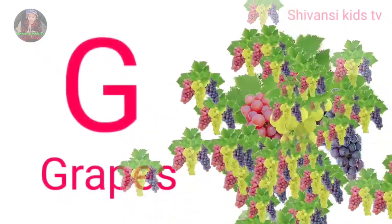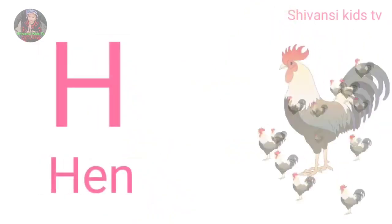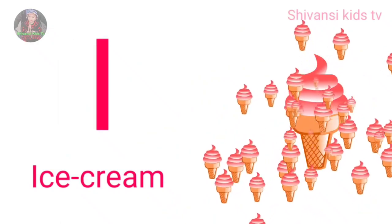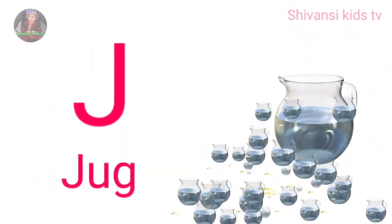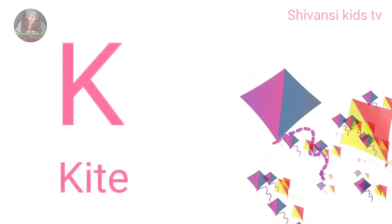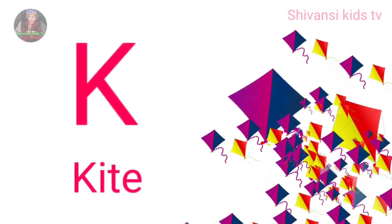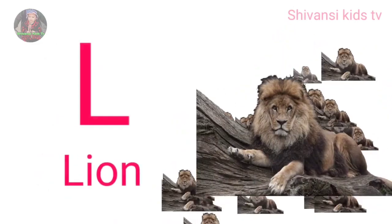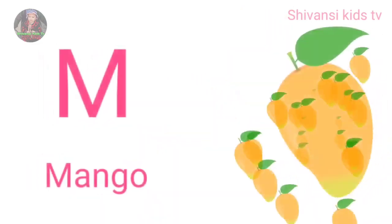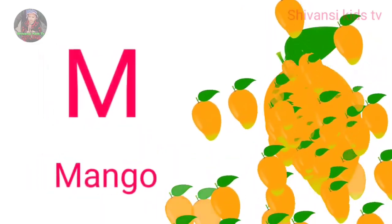H for hand, I for ice cream, J for jug, K for kite, L for lion, M for mango.